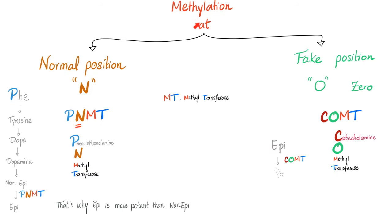Methylation is a double-edged sword. It can add a methyl group to the N position, giving you something valuable such as epinephrine, or it can add a methyl group onto the O position — the zero position — giving you some pieces of trash. PNMT enzyme adds the methyl group into the N position, converting norepinephrine into the even more potent epinephrine. However, COMT enzyme — catecholamine-O-methyltransferase — transfers the methyl group into the O or garbage position, converting epinephrine into degradation products or inactive metabolites.